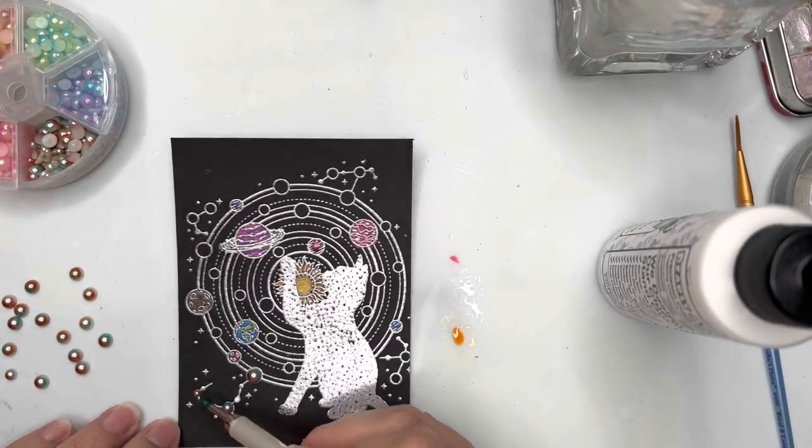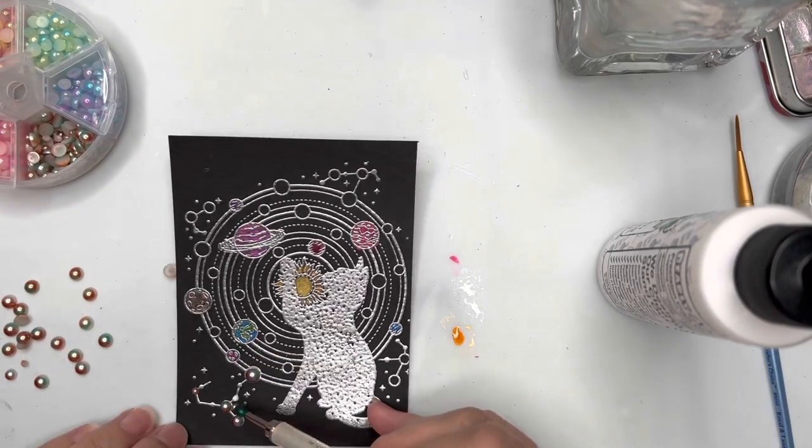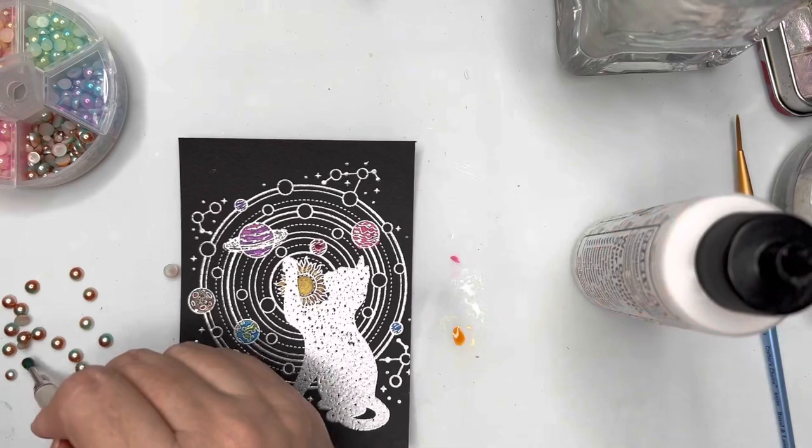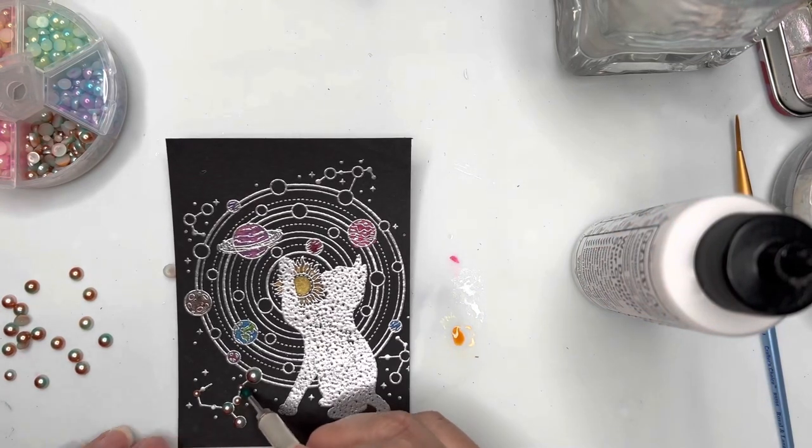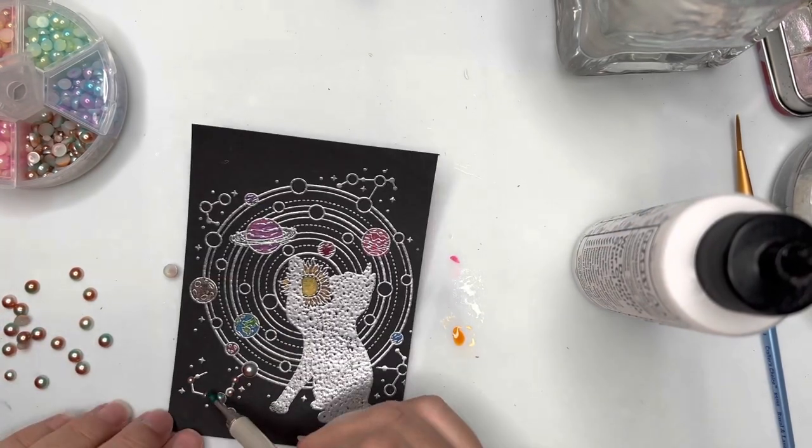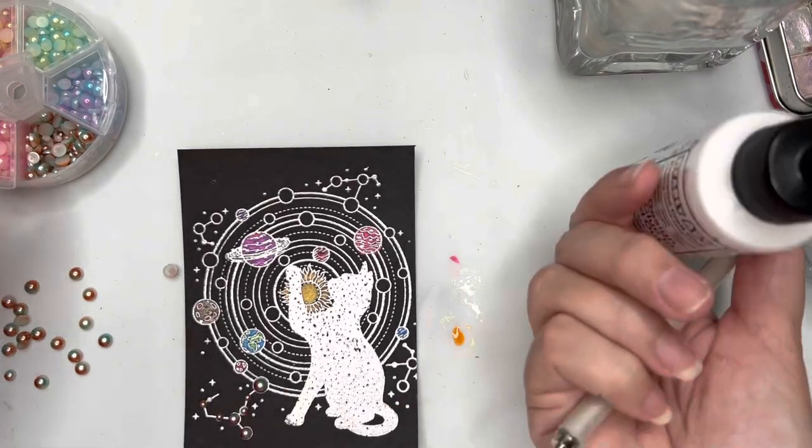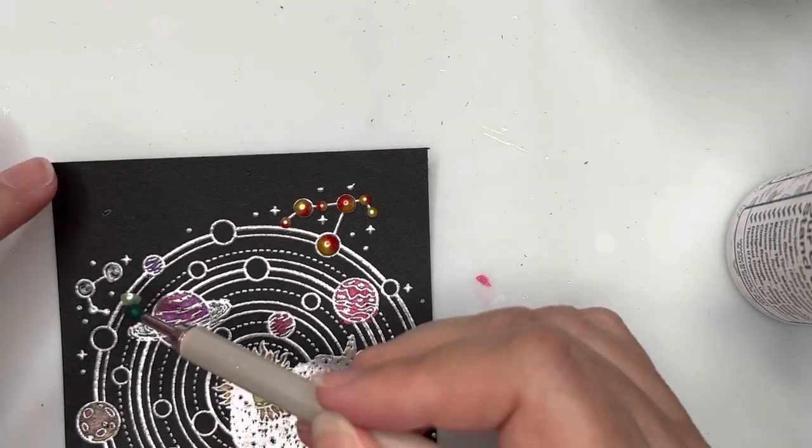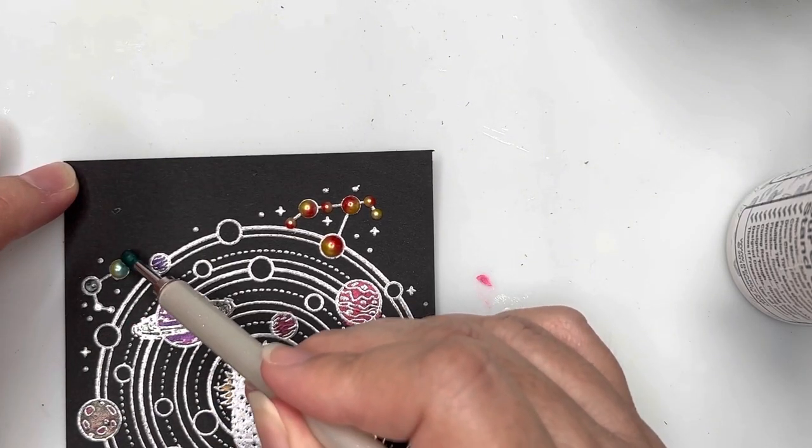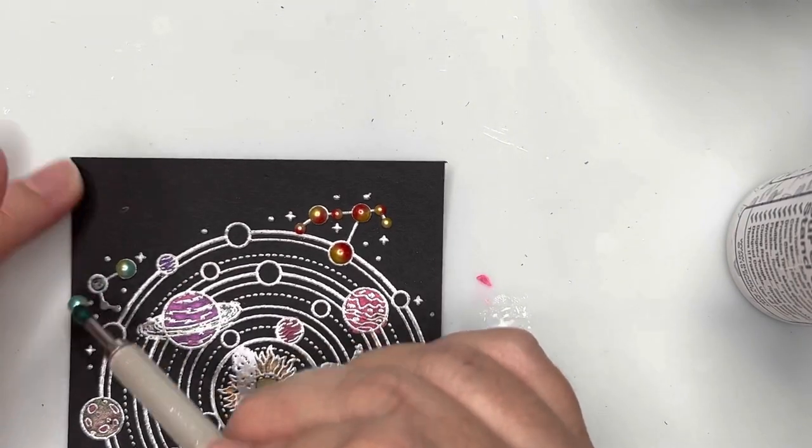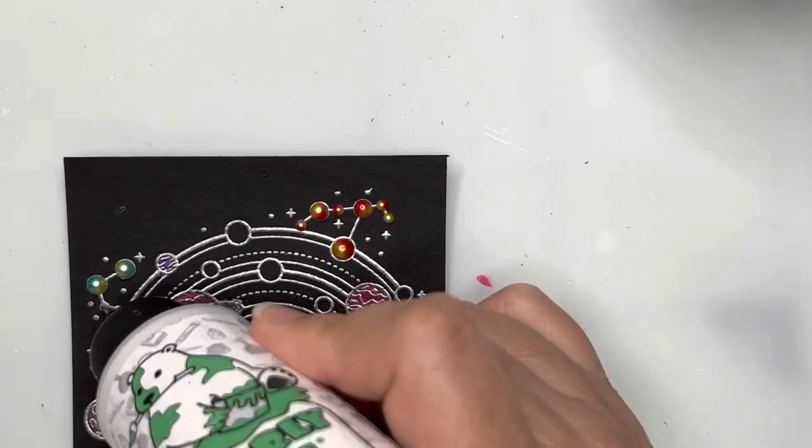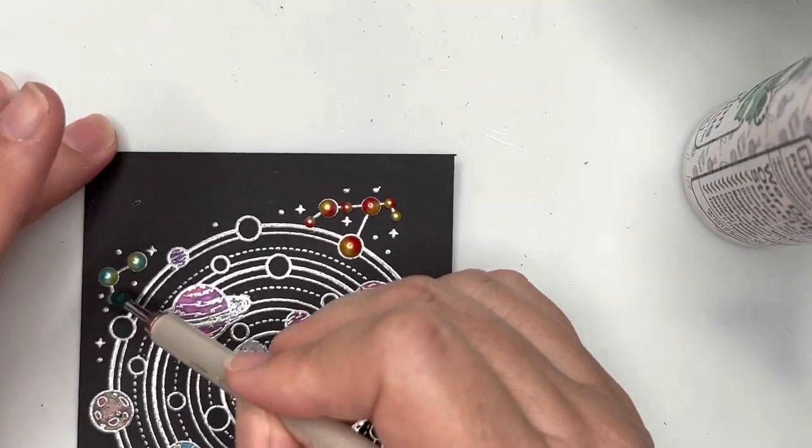I'm now going ahead and I'm using these two-toned flat back pearls from Pink and Main. I'm going to use a variety of colors to highlight the different star signs or star constellations around the card there.